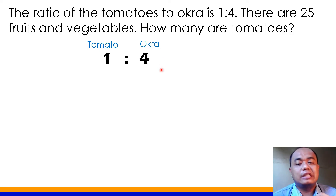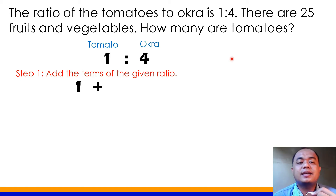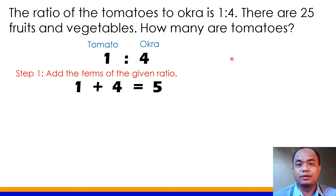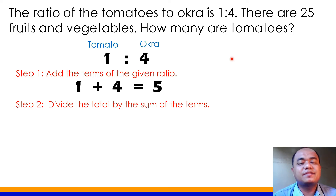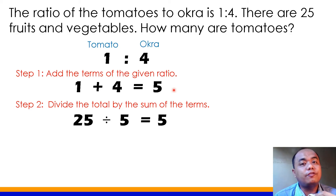Can you still remember the steps in solving problems involving partitive proportion? Step 1: add the terms of the given ratio. So yung 1 at saka yung 4, i-add natin yan — that equals 5. Step 2: divide the total by the sum of the terms. I-divide na natin yung whole number na 25 sa sum ng ratio, which is 5. So, 25 divided by 5 will give you 5.